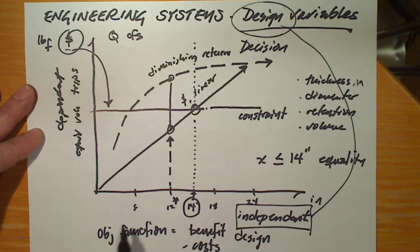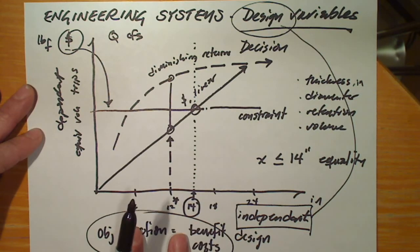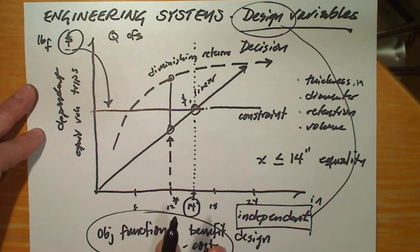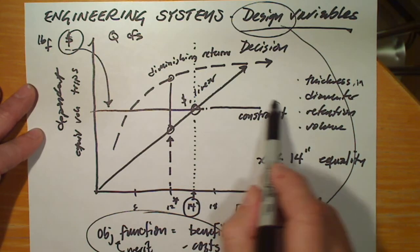The objective function is that function that we use to determine which of the feasible designs is superior. That is, how do we know if one design is better than another? We're going to measure it using the objective, also sometimes called the merit function.